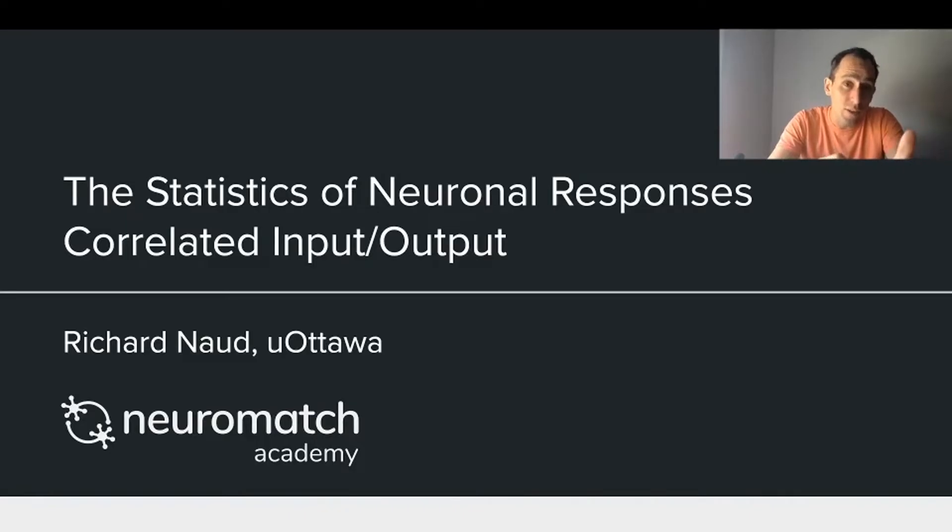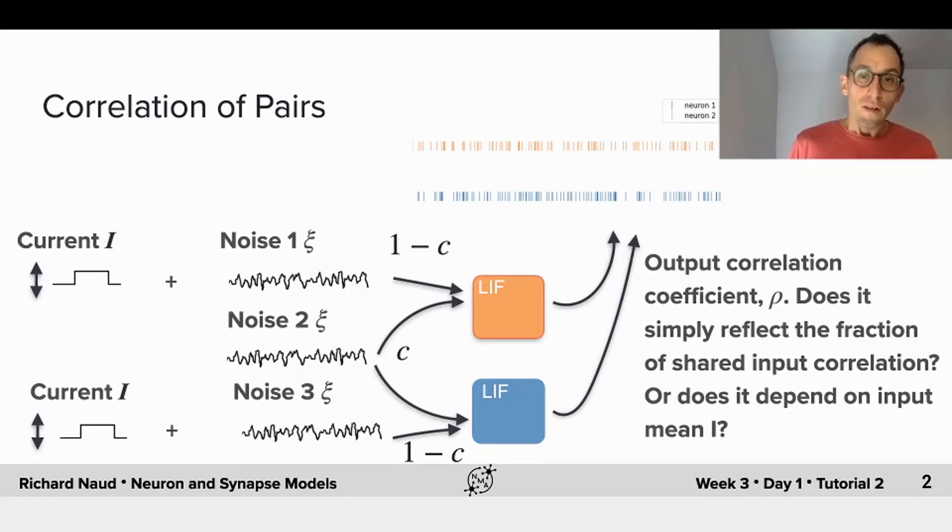We've treated the firing rate and the variability of the spiking response and how this depends on the mean input and the variability of the input. The last feature I want to consider is correlation.